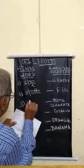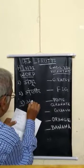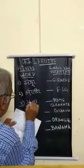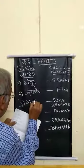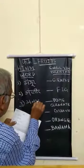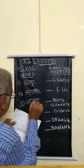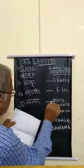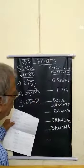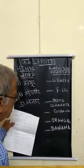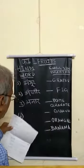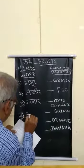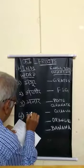Next is Anar. A, Na, Ra — Anar. Anar means pomegranate.